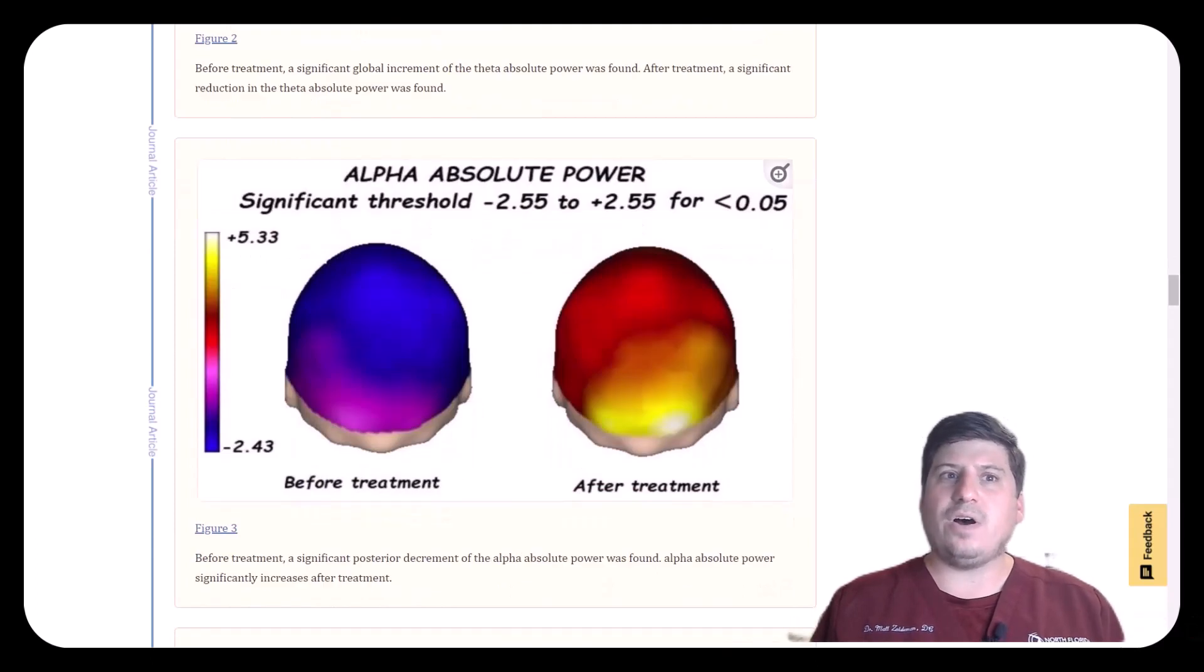Alpha waves are waves that are involved in cognitive function in focus. We see a reduction in alpha waves before treatment in the autism group with a significant increase post-treatment.